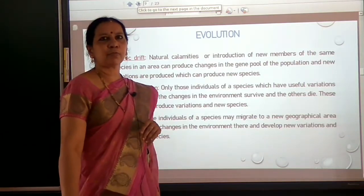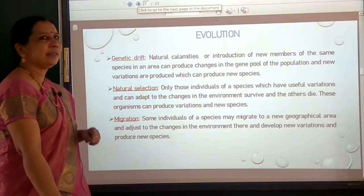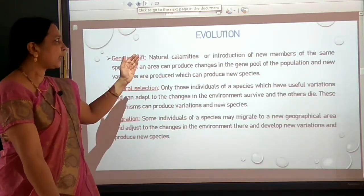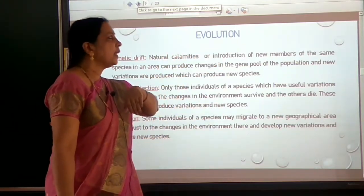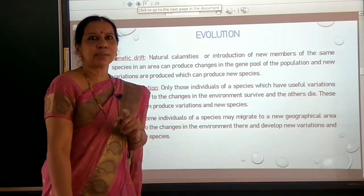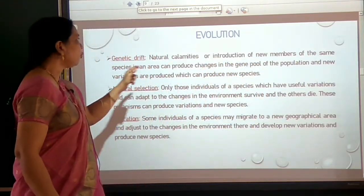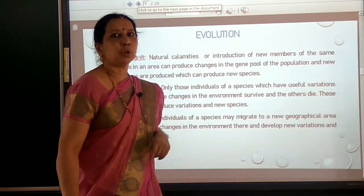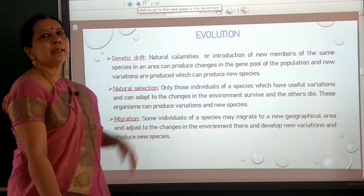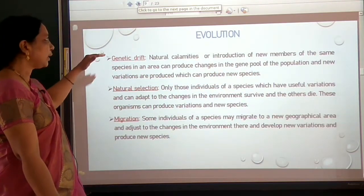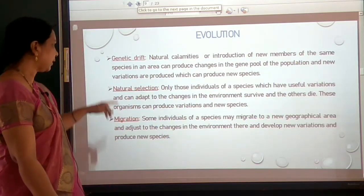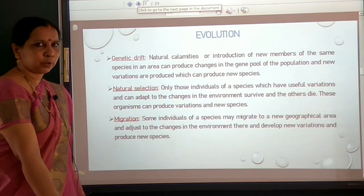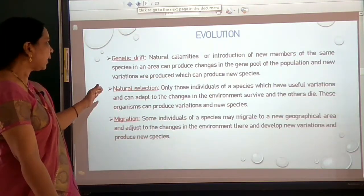Another factor which helps in the formation of a new species is genetic drift. Natural calamities or introduction of new members of the same species in an area produce changes in the gene pool of the population. New variations are produced which can lead to new species. So genetic drift helps in the formation of new species by producing changes in the gene pool, leading to new variations.